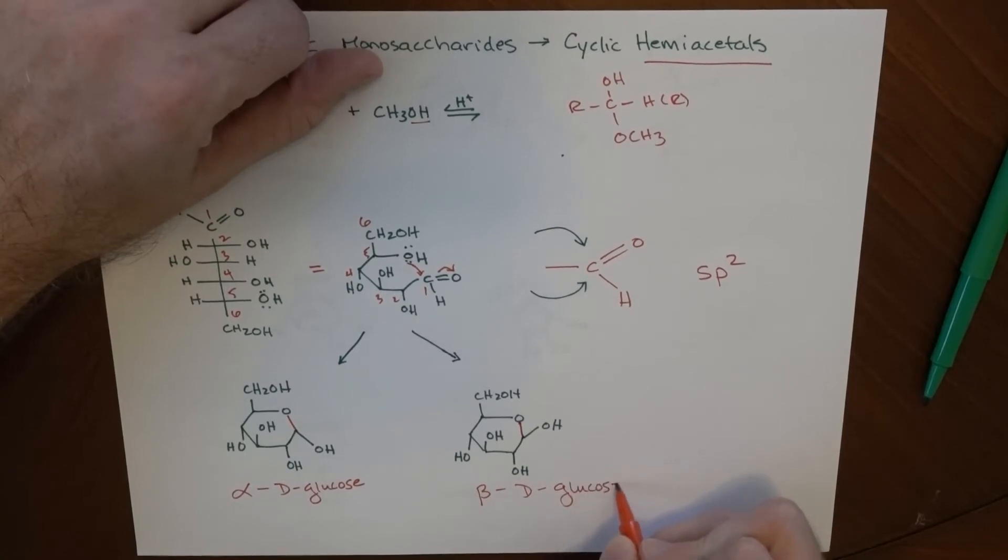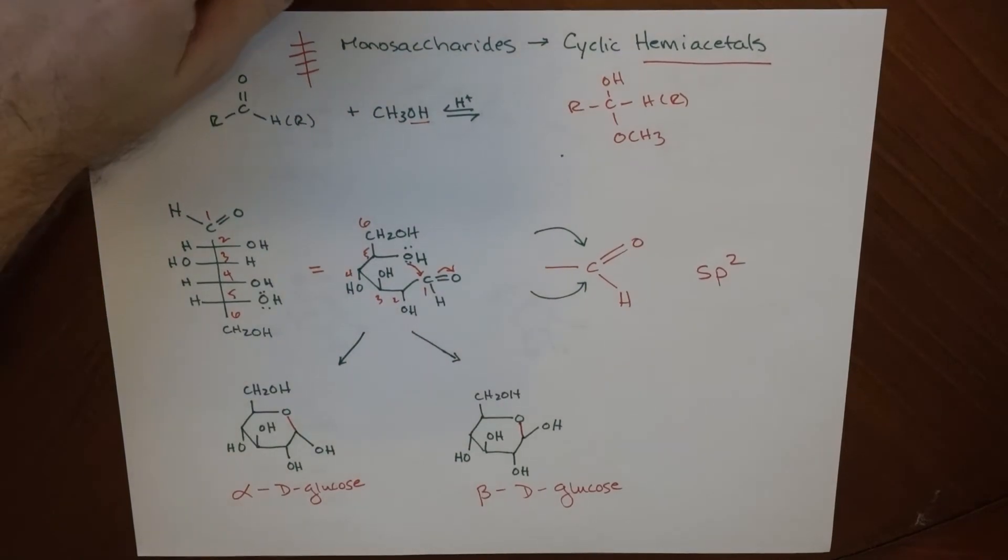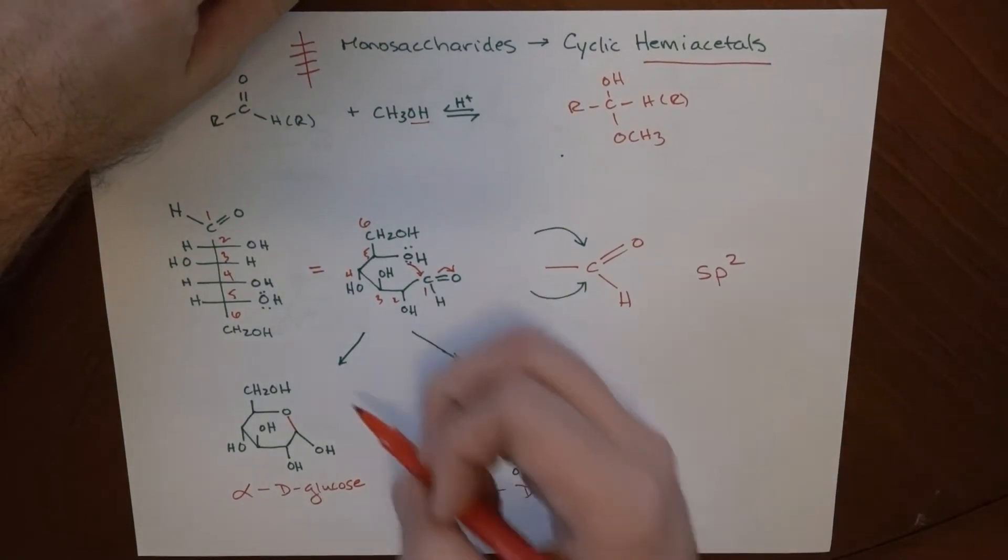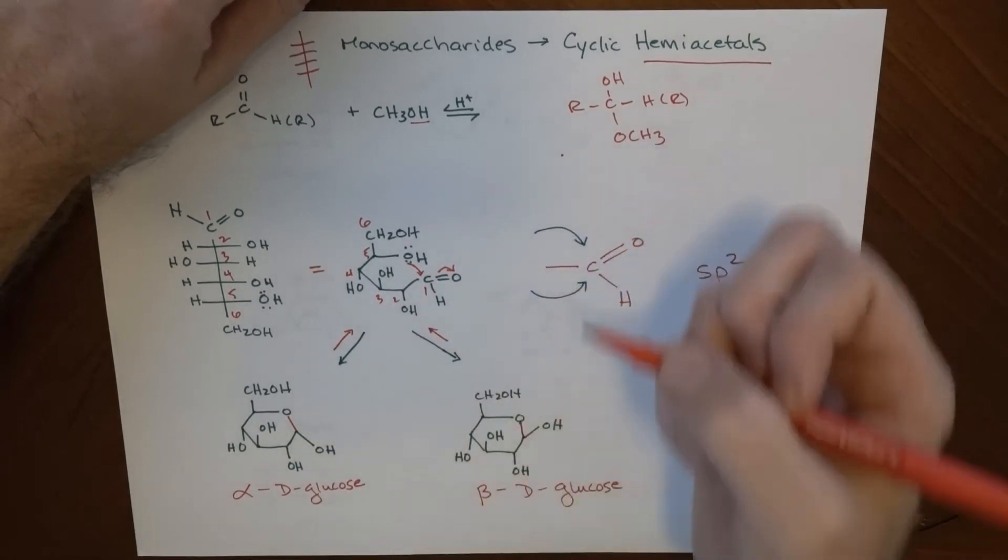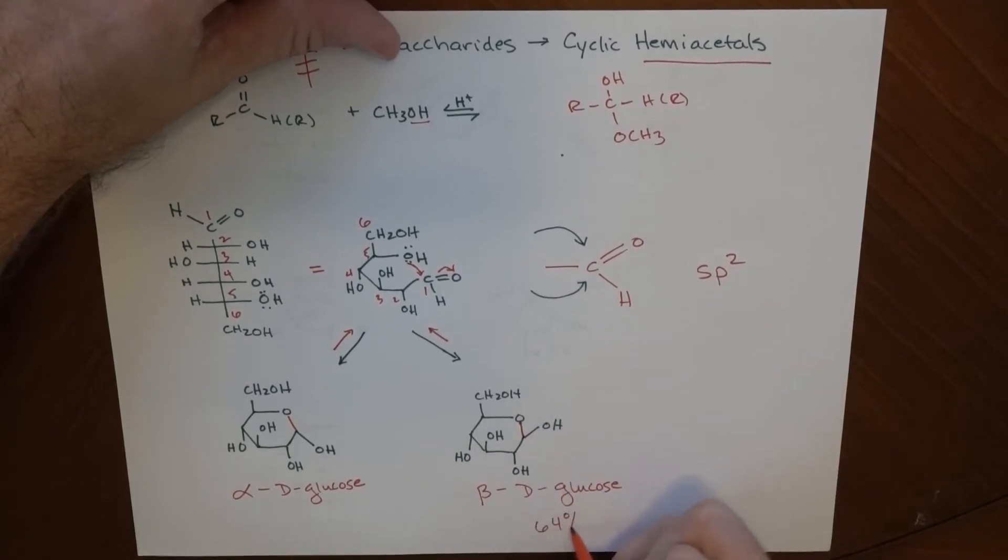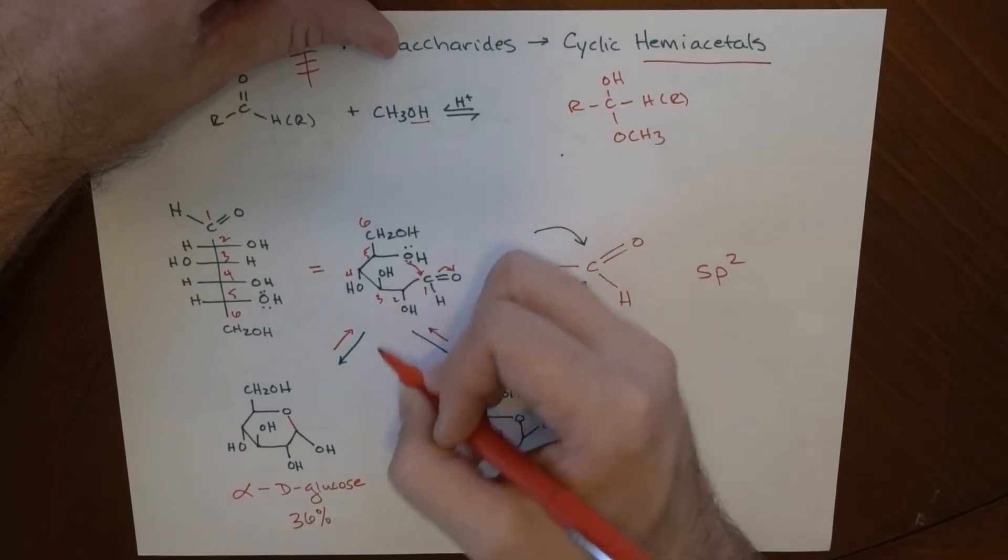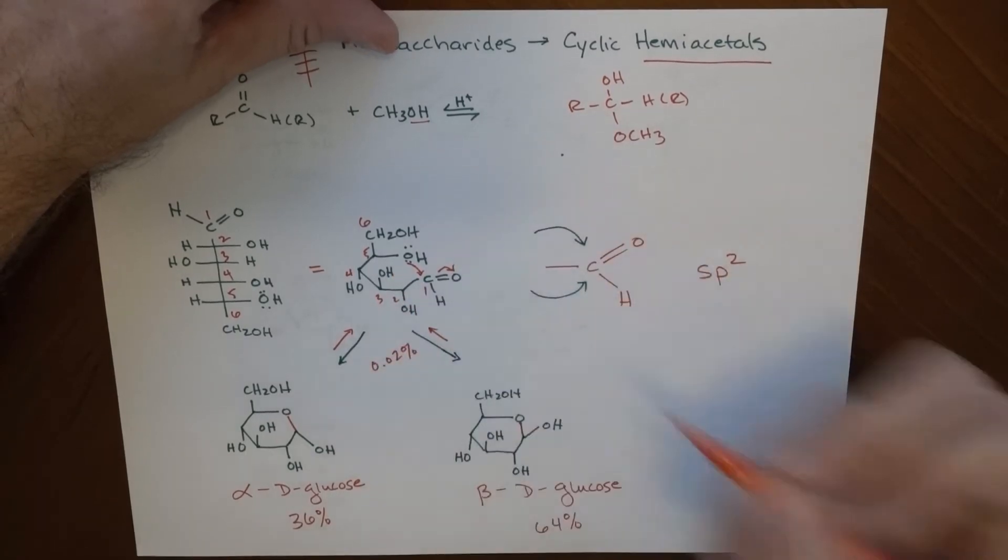And there's a big difference between those two molecules and the kinds of things that they can form. So, in general, this is an equilibrium. And in this equilibrium, we tend to see things that are on the beta side here, roughly 64% of the time. And we see this just about 36% of the time. And we see things in the linear form less than 1% of the time. Your book gives it as 0.02%.